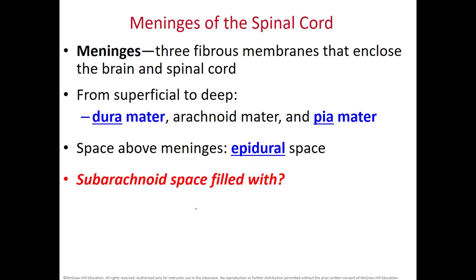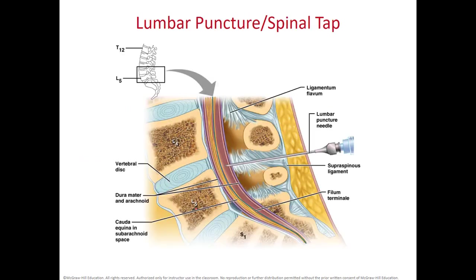In the subarachnoid space you're going to have cerebrospinal fluid. If you need to do a spinal tap to analyze the cerebrospinal fluid, you want to do the puncture below where your spinal cord ends — such as at L4 and L5. A very sharp needle has to go through the connective tissue between the bone and then penetrate the dura and the arachnoid to reach the subarachnoid space.